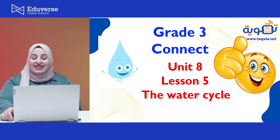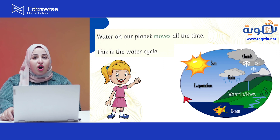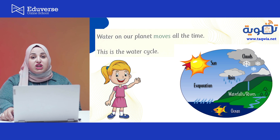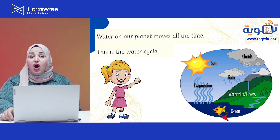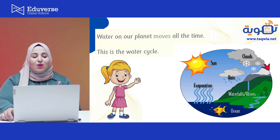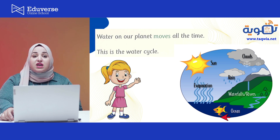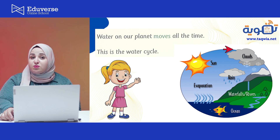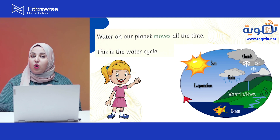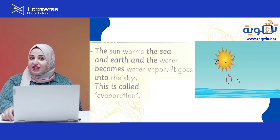Today we are going to talk about something called the water cycle. Have you ever heard about the water cycle? Do you know what is the meaning of the water cycle and how can we describe it? The water cycle means that the water on our planet moves all the time, and this movement is called the water cycle.